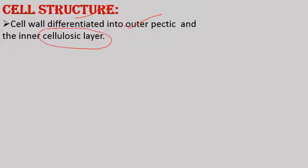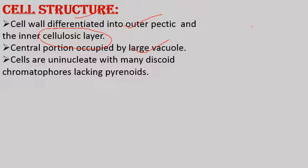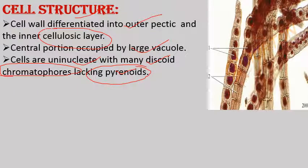Regarding cell structure: Polysiphonia shows a typical eukaryotic cell structure. The cell wall is differentiated into two layers — the outer layer is made up of pectic substance and the inner layer is made up of cellulosic substance. The central portion is occupied by a large vacuole. Cells are uninucleate — a single nucleus is present — and contain various discoid chromatophores made up of chlorophyll A and chlorophyll D. Pyrenoids are absent in Polysiphonia. It also contains biliproteins like R-phycoerythrin and R-phycocyanin.